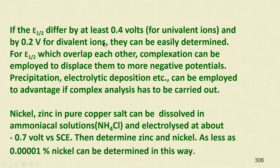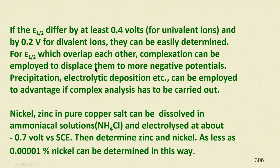0.05 percent gelatin should be added to remove the appearance of maxima. If E_half values differ by at least 0.4 units, one can determine multiple elements — for example univalent ions like sodium, lithium, potassium, thallium, cuprous, etc. For divalent ions, E_half should differ by at least 0.2 volts. When E_half values overlap, complexation can be employed to displace them to more negative potentials.